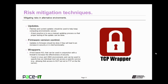Then we have wrappers, also known as TCP wrappers. These are a host-based access control list, or host-based ACL, that can be used in conjunction with a firewall to increase the effectiveness of security. Wrappers can be found in Linux environments and can be used to specify how an individual host can access a specific service — for example, you can use TCP wrappers to allow Bob access to Secure Copy Protocol but not to File Transfer Protocol on the file server.